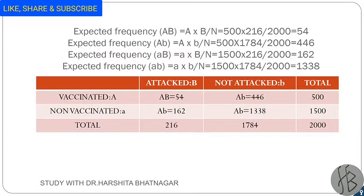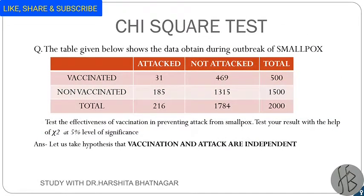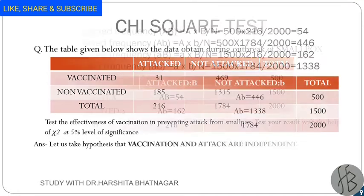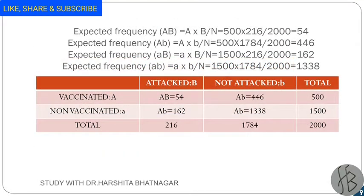Now calculate the expected frequencies — observed frequencies are already given in the question. The formula is: row total multiplied by column total, divided by n. We need to calculate expected frequencies for all four cells, but the totals remain the same.